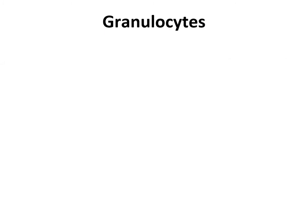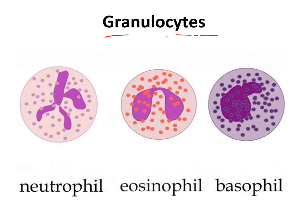The three types of granulocytes are neutrophils, eosinophils, and basophils. These names refer to the pH of the stain used to stain the cells: neutrophils use a neutral stain, eosinophils use an acid stain, and basophils use a basic stain. That's just where the names come from.